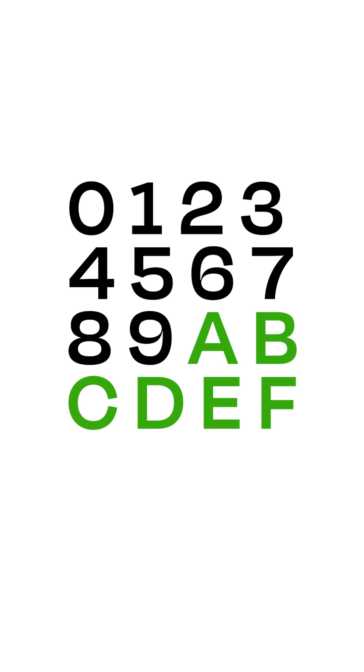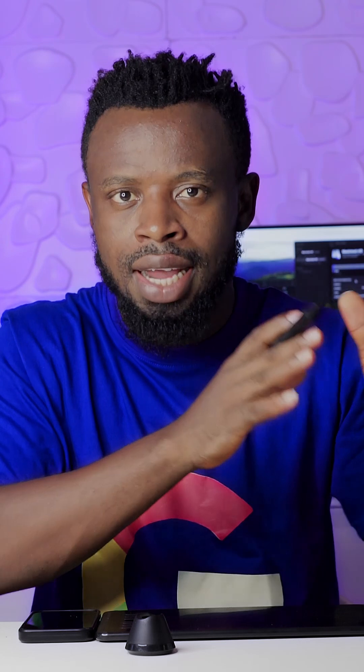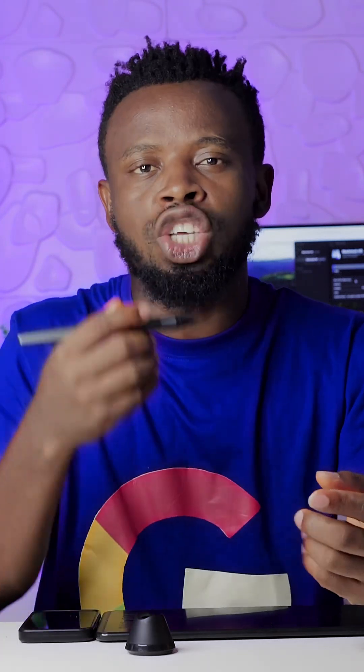Beyond decimal counting, there's what they call hexadecimal counting — I call it base-16 counting. It's almost like decimal counting, but they add letters. When you count from zero to nine, you continue — you don't stop — you go on to A, B, C, D, E, F. So zero to nine, then A, B, C, D, E, F — a six-plus-ten system. They call it hexadecimal counting.